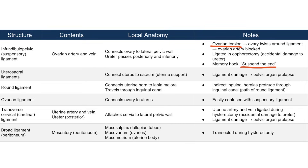We just talked about ovarian torsion and how it can lead to ovarian ischemia resulting from blockage of the ovarian artery. The last important idea to know about the suspensory ligament is that the ureter passes posteriorly and inferiorly. This is important because during surgical removal of the ovary, the surgeon needs to be mindful of how close the ligament is to the ureter.